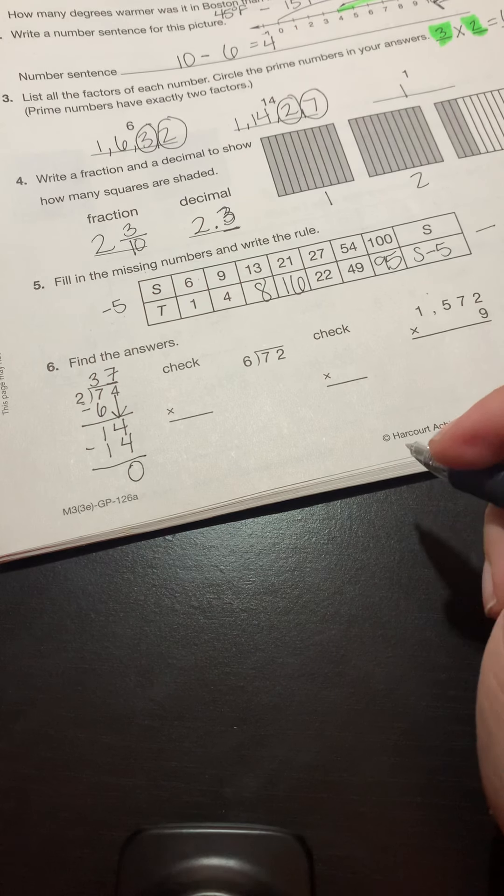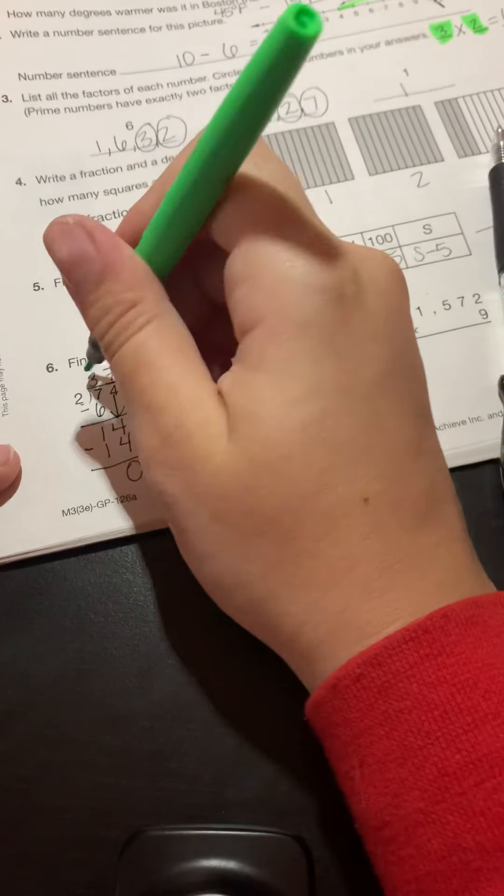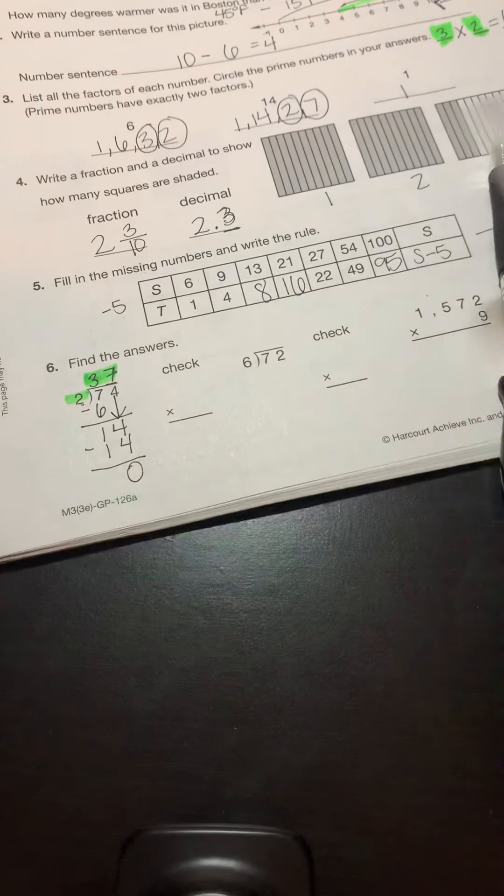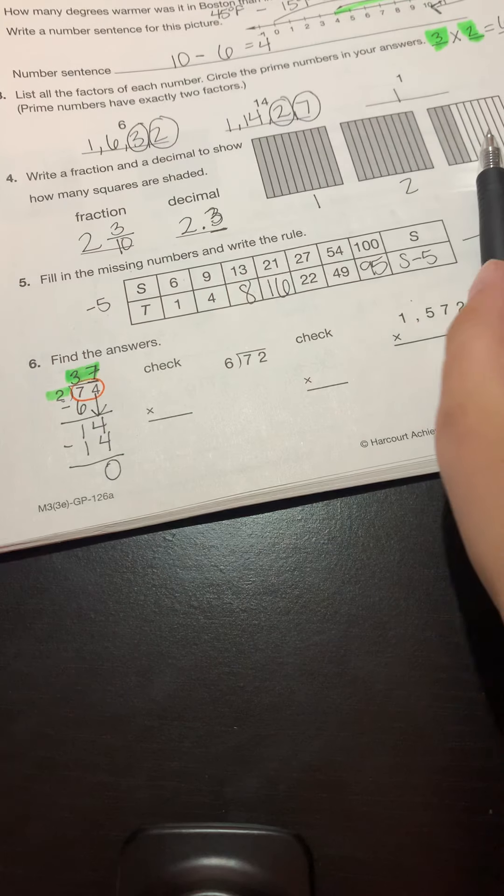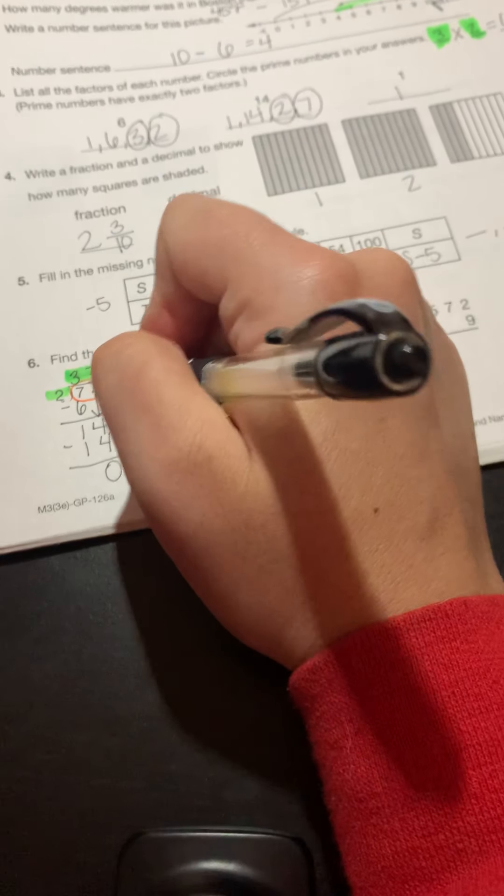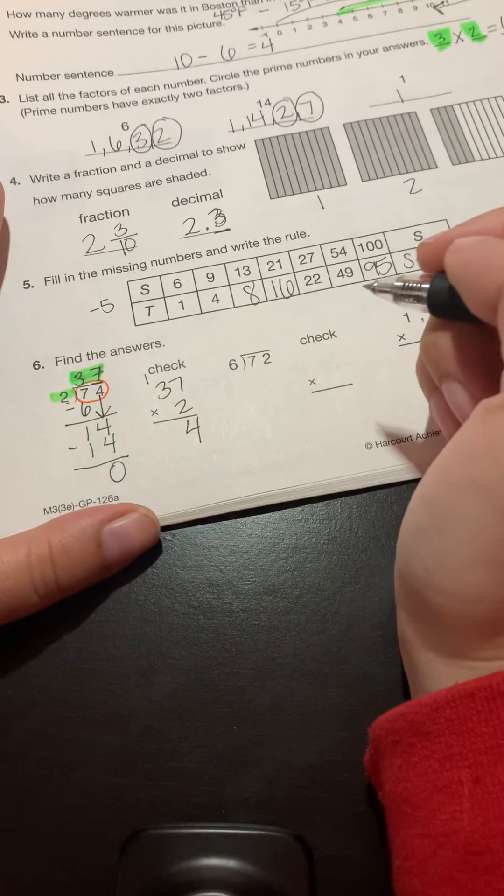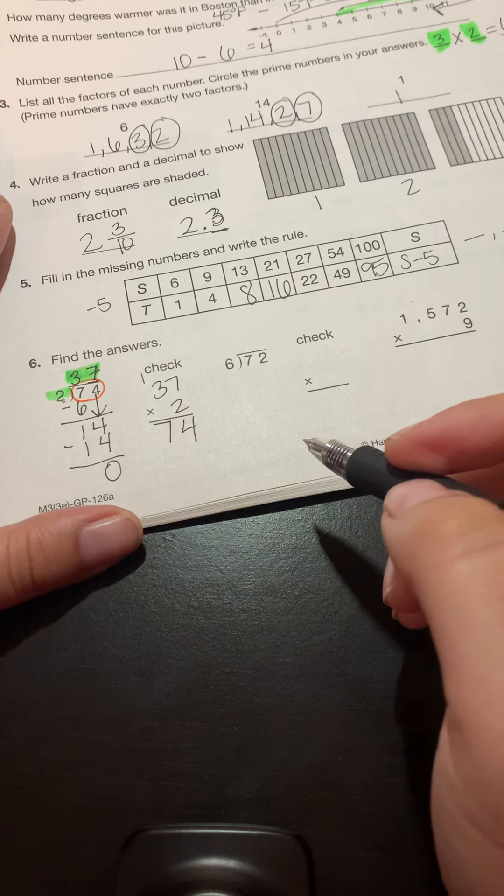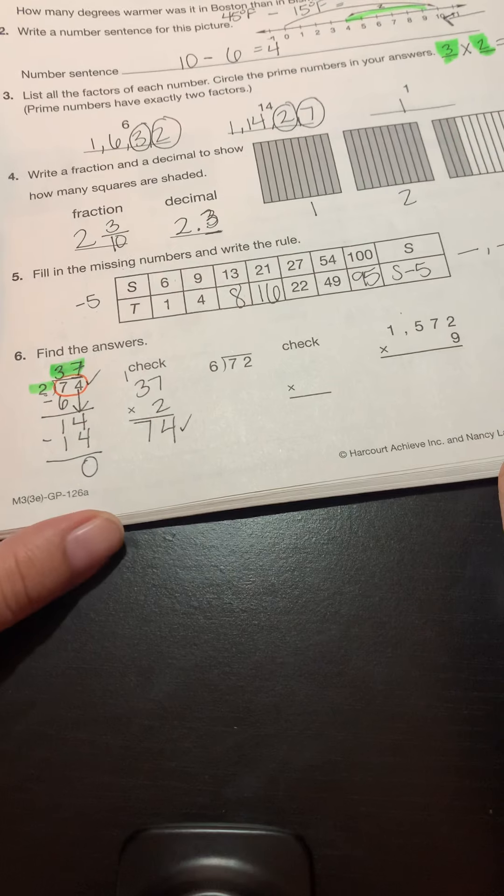So how do I check my answer? I'm going to take the two numbers that are outside of this little house and multiply those together. If my answer is this number inside of the house, then I'm correct. So I have to do 37 times two. What's two times seven? 14. Perfect. What's three times two? Six plus one more. Our answer is 74. Are we correct? We are. 74 and 74 are the same number, which means we are correct.